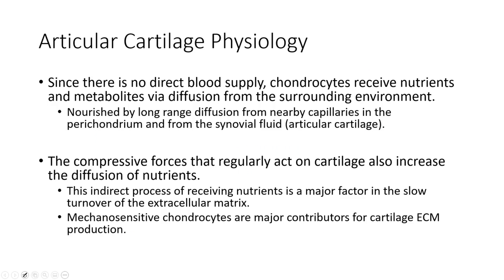Since there's no direct blood supply — unlike tendons and ligaments, which are hypovascular, cartilage is avascular. There is no direct blood supply to cartilage. Chondrocytes get their nutrition through diffusion from the surrounding environment — long-range diffusion from nearby capillaries — but there is no direct blood supply at all. This is why cartilage can never become very thick; at most, articular cartilage gets about two to four millimeters thick.